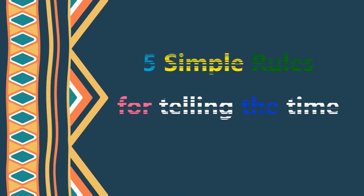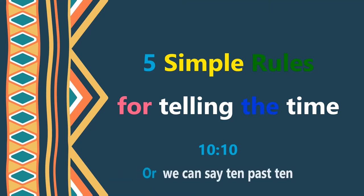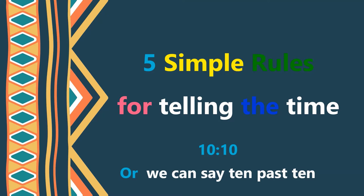Hello everyone, welcome to this video. In this video I will tell you about five simple rules for telling the time. A quick example: 10:10 — how to say it in English? Instead of 'ten point ten' we say 'ten past ten.' Now let's move to the first rule.